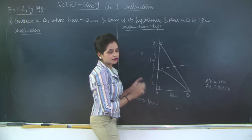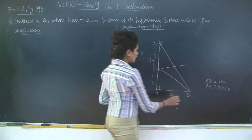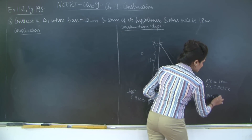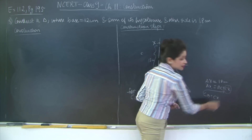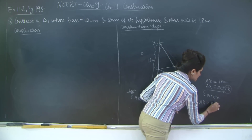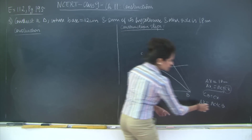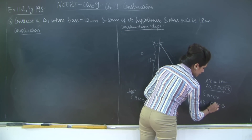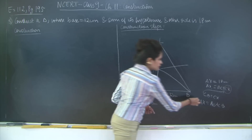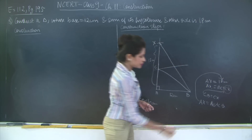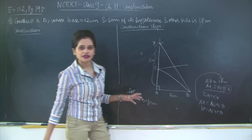CB is equal to CX because C lies on the perpendicular bisector of BX — therefore it is equidistant from the endpoints of that line segment. So CB equals CX, and instead of CX I can write CB. Therefore AX equals AC plus CB, and since AX equals 18 centimeters, we have proved that AC plus CB equals 18 centimeters.